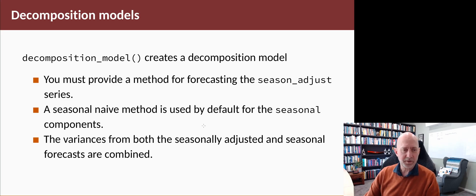But if you don't provide a method for forecasting the seasonal component, it will use seasonal naive. When it comes to producing the forecast intervals, the prediction intervals around your forecast, it's using the variances from both of those models and adding them together to get the prediction intervals for the original series.